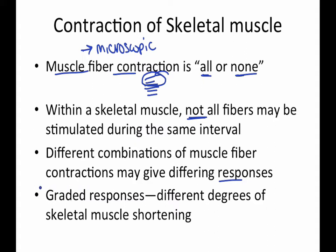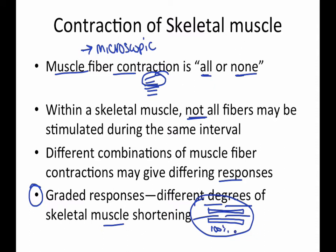Different combinations of muscle fiber contractions can give different types of responses. These responses are known as graded responses — the different degrees of skeletal muscle shortening. We're still talking about those myosin and actin subunits. For each fiber it's either going to be 100% or nothing, but you have hundreds of thousands of these, so you get a graded response depending on how many you contract versus the frequency of contraction.